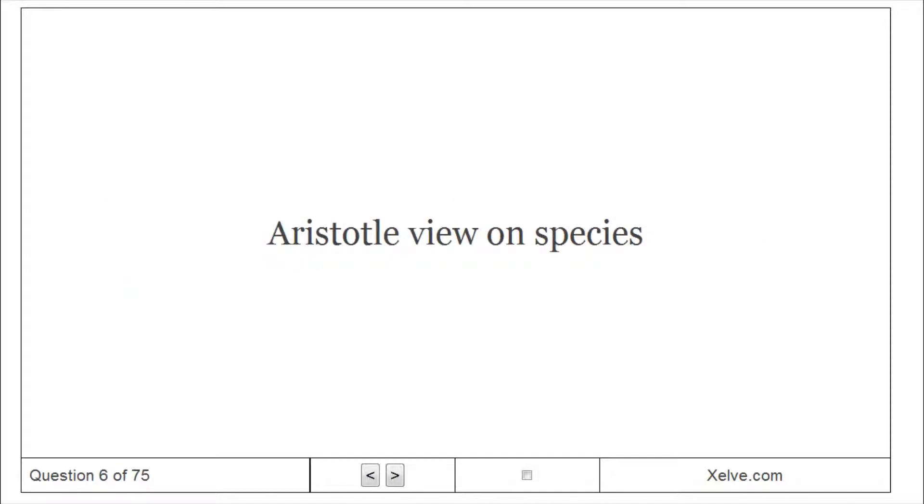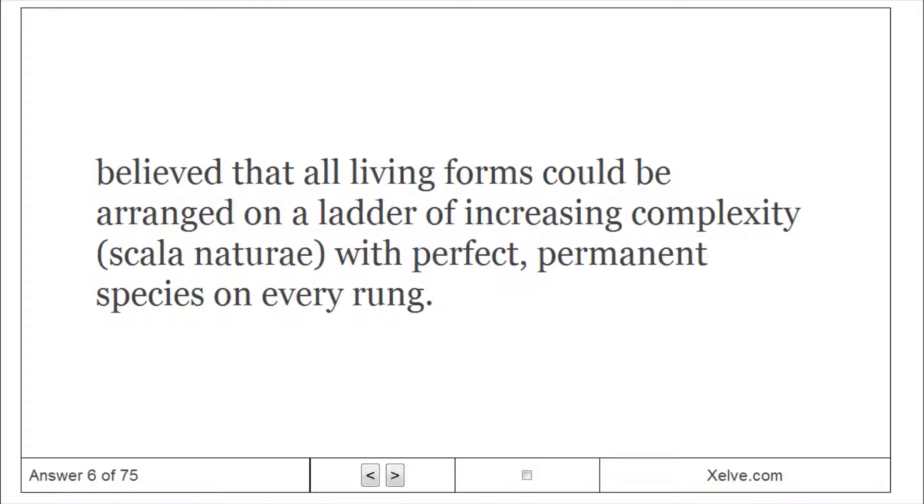Aristotle's view on species: Believed that all living forms could be arranged on a ladder of increasing complexity, Scala Naturae, with perfect, permanent species on every rung.